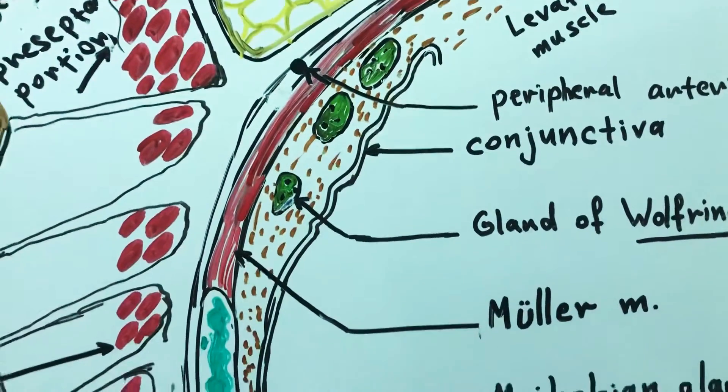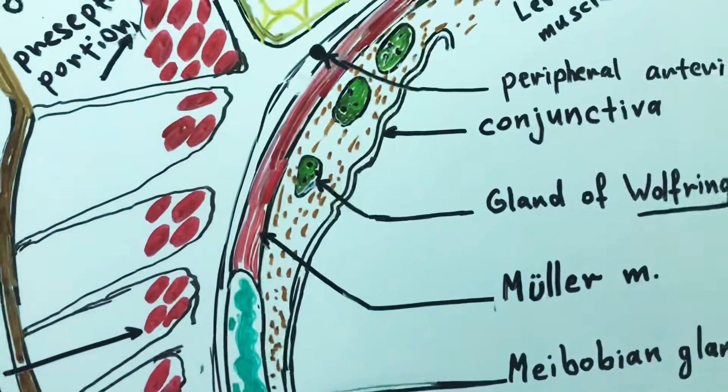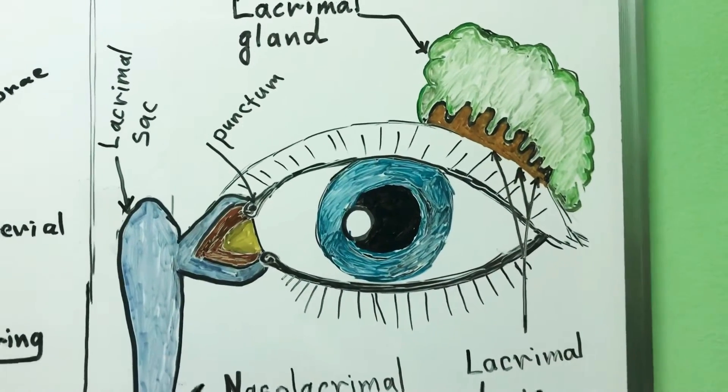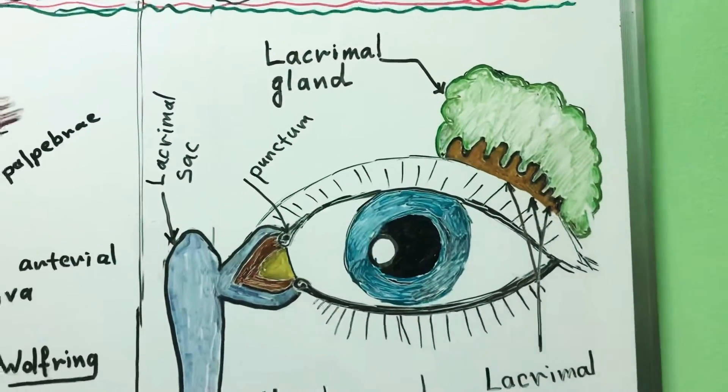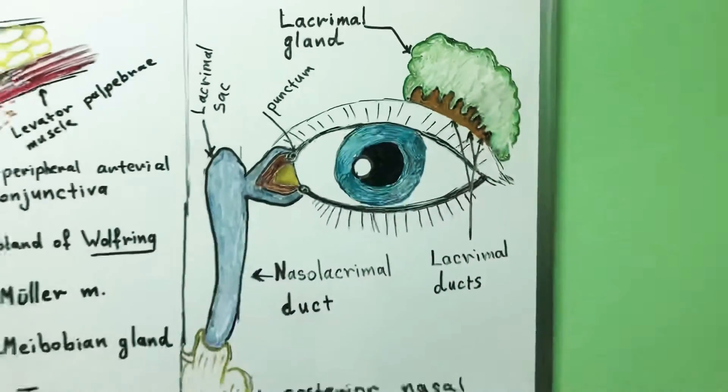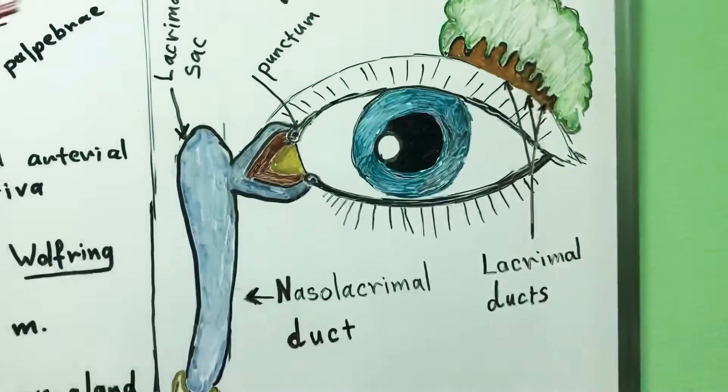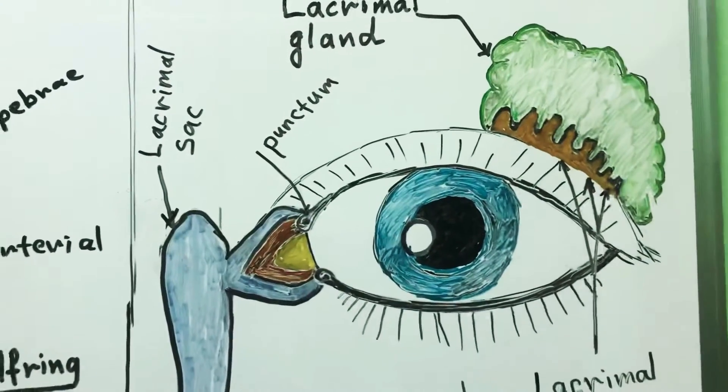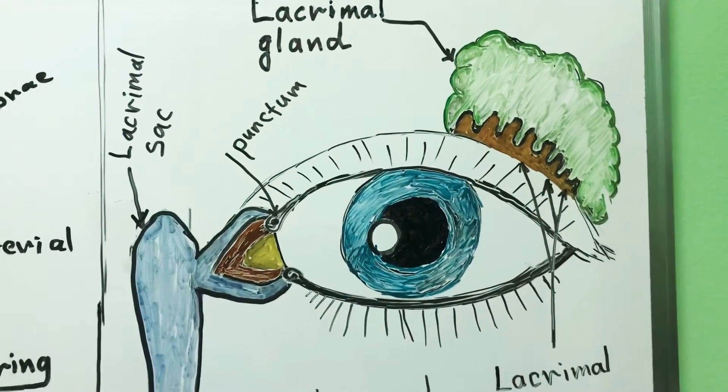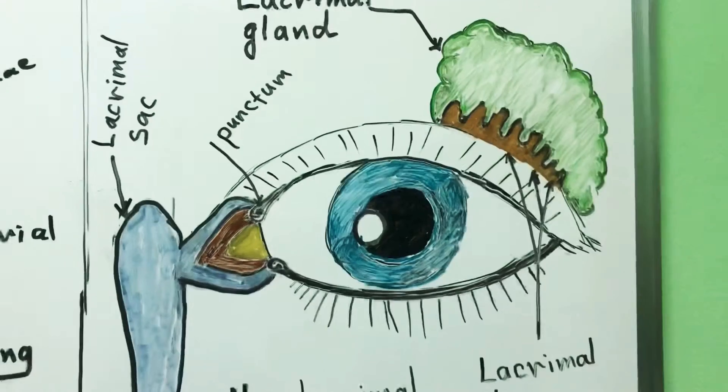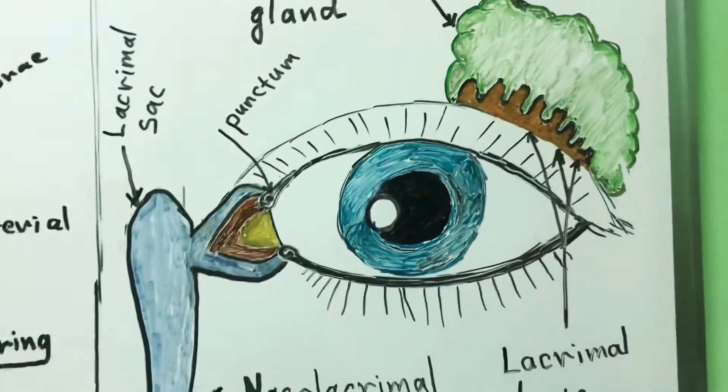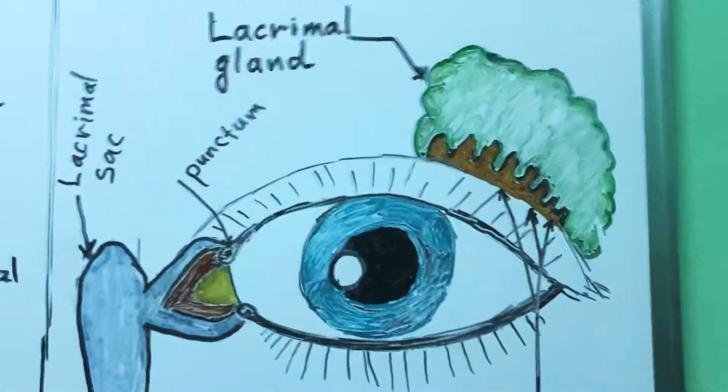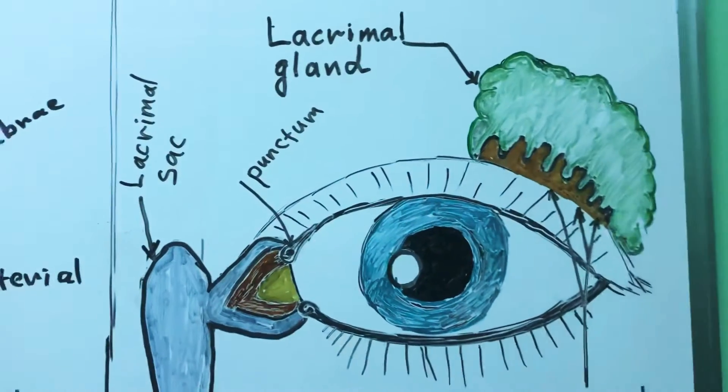The conjunctiva also contributes to the immune surveillance and impair invading of microbes into the eye. The last structure of the ocular adnexa is the lacrimal apparatus. The lacrimal apparatus includes anatomically connected structures that produce the aqueous tear. Aqueous tear is one layer of the tear film as we will discuss.